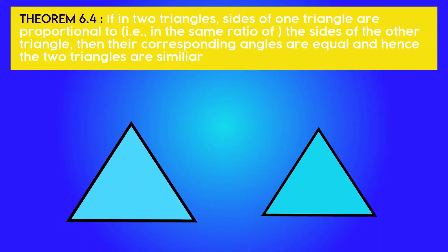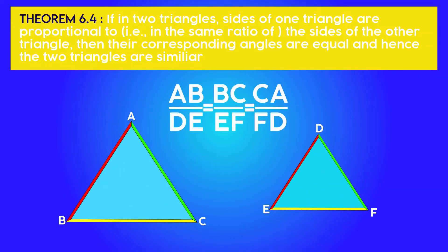Theorem 6.4: If in two triangles the sides are proportional to each other, then the angles of these triangles are equal. Hence these triangles are similar. This is known as the SSS similarity.